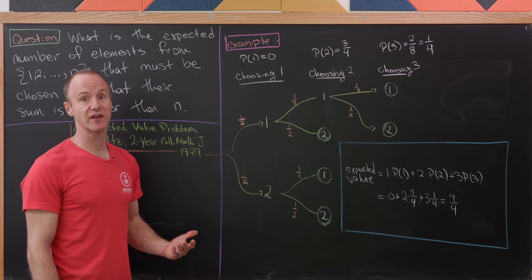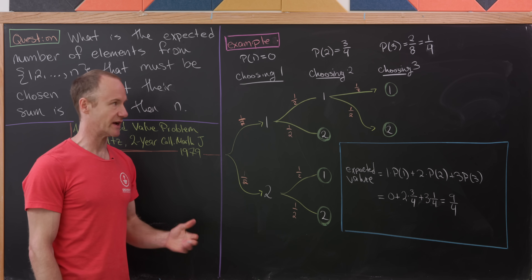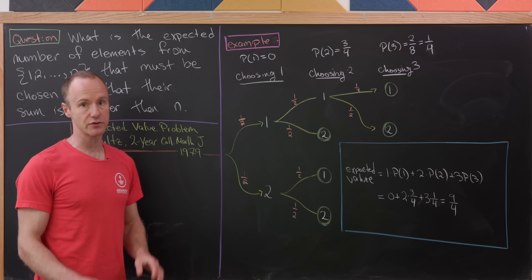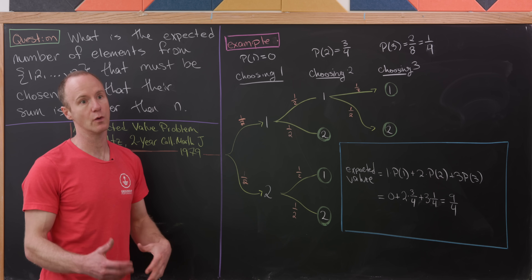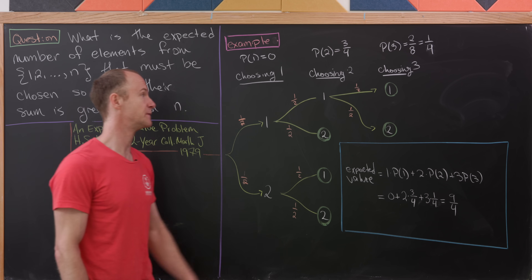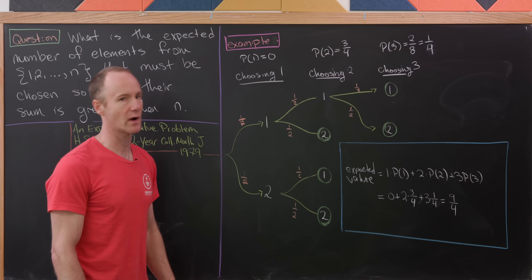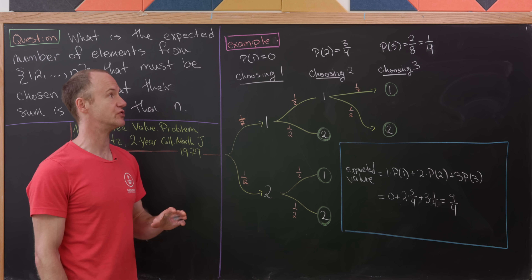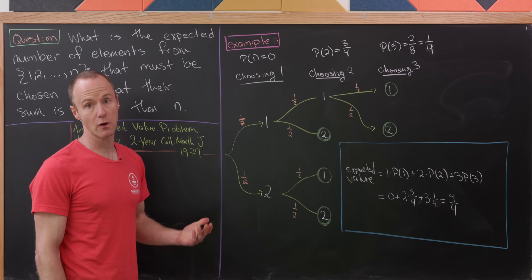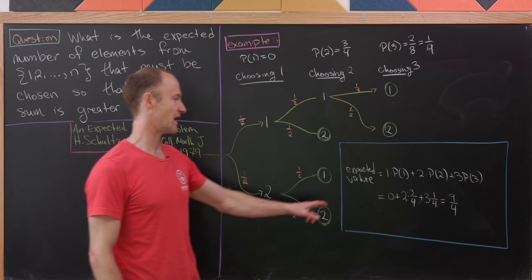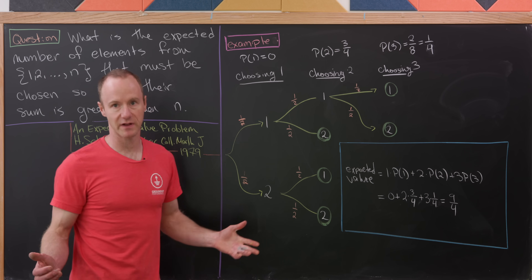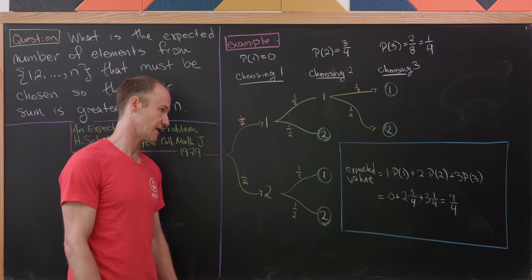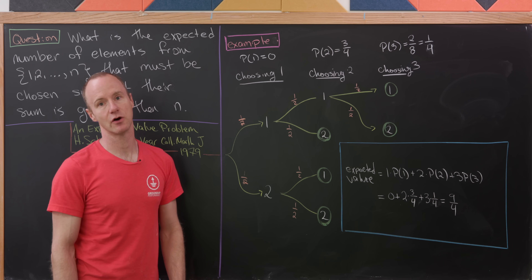Now let's move on to choosing three numbers. That branch only occurs off of the branch where we chose two ones in a row, but anything you choose after choosing two ones in a row will achieve a sum bigger than two. Each of those comes with a cumulative probability of one-eighth, so the probability that you'll need to choose three is two over eight, or one over four. The expected value is one times zero plus two times three-quarters plus three times one-quarter, which after doing all the arithmetic gives nine over four.